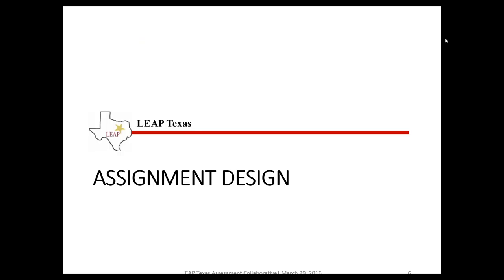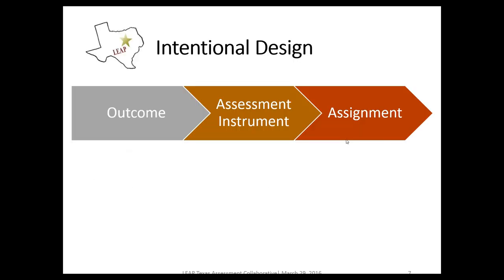Looking at assignment design from a general perspective, you really want to do backwards design — start with the outcome and then work from there to determine, given the outcome, what sort of assessment method or instrument we need to determine whether or not students have attained that outcome. With that assessment instrument developed, you can then move forward into designing the assignment so that you're eliciting a response from the student that expects them to perform in ways that the assessment instrument has defined.